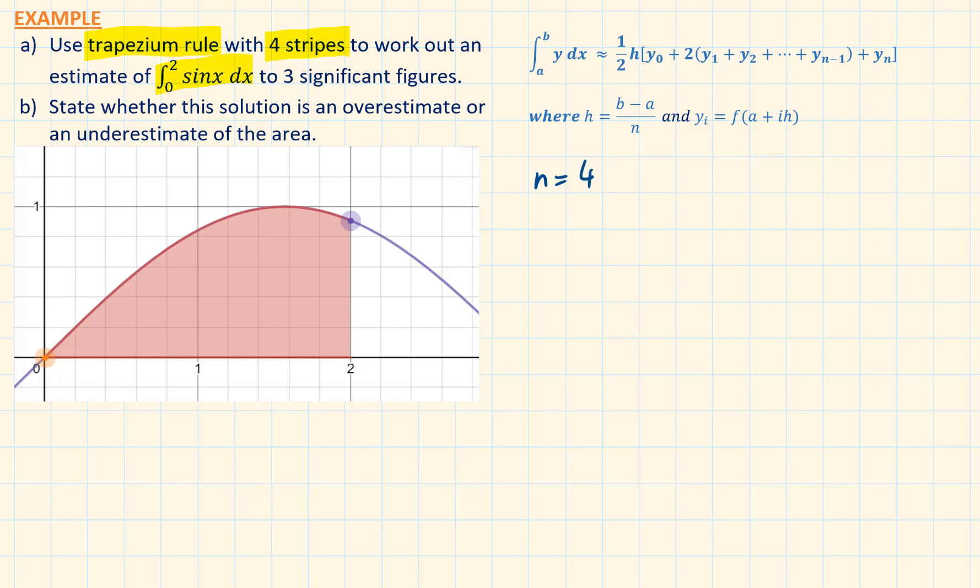N represents the number of strips, the number of trapezia. Our n is 4, a is 0, b is 2. The width of the strips is given by h, b minus a over n, that is 2 minus 0 over 4, equals half.